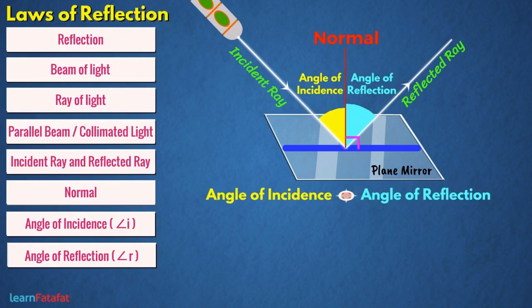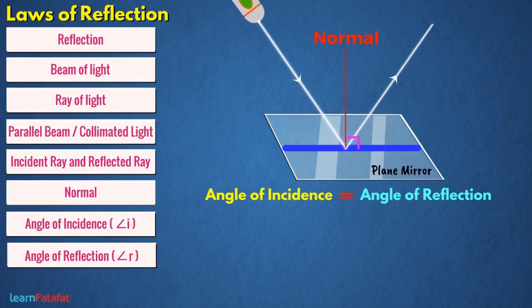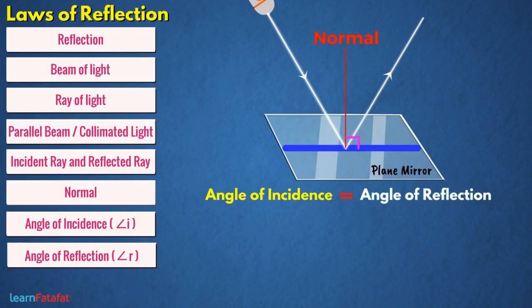you will find that these are equal. If you change the angle of incidence, in this case also you will see the angle of reflection is same as the angle of incidence. This observation gives us the first law of reflection.